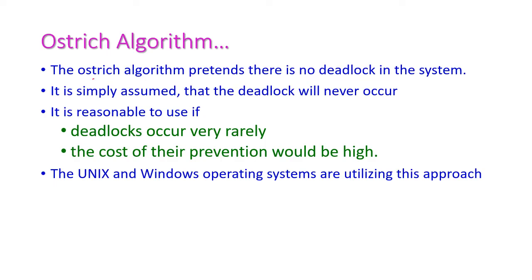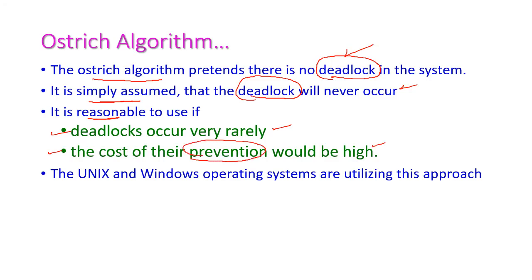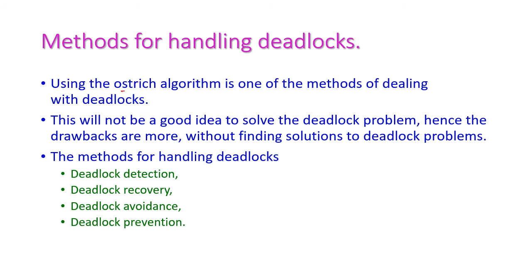Like the bird, the ostrich algorithm pretends there is no deadlock in the system, and it assumes that deadlock will never happen. This is also reasonable when deadlock occurs very, very rarely in the system, or the cost of prevention is very high. In this situation we can use the ostrich algorithm. The Unix operating system and Windows operating system both utilize this particular approach. Using the ostrich algorithm is one of the methods for dealing with deadlock if the system is very complicated.